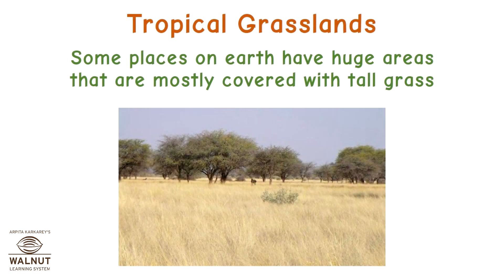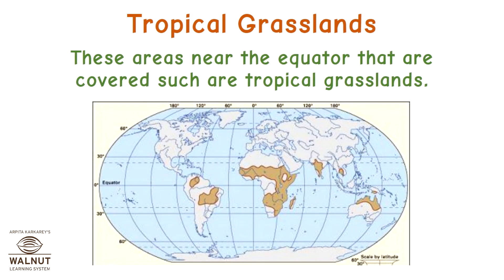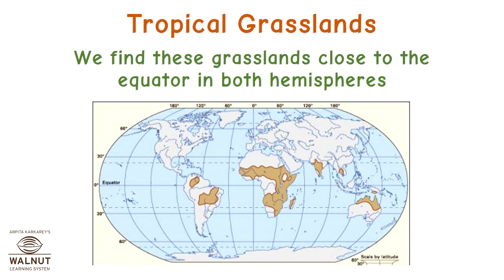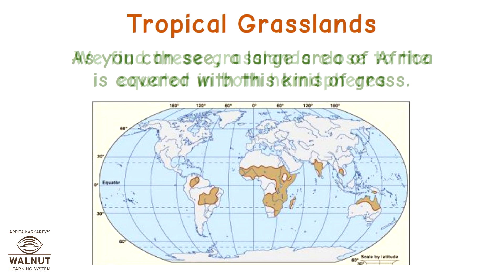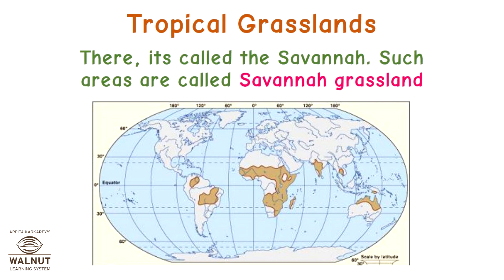Some places on earth have huge areas that are mostly covered with tall grass. These areas near the equator that are covered such are called tropical grasslands. We find these grasslands close to the equator in both hemispheres. A large area of Africa is covered with this kind of grass — there it's called the savannah, so such areas are called savannah grasslands.